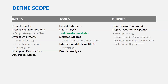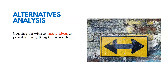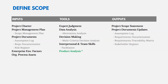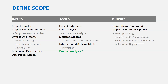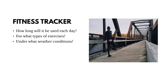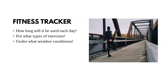Alternatives analysis is coming up with as many ideas as possible for getting the work done. Product analysis defines scope by asking questions about the use, characteristics, and other relevant aspects of what's going to be manufactured. For example, if you're creating a fitness tracker, you might ask potential customers: how long will it be used each day, for what types of exercises, under what weather conditions. The key output is the project scope statement — a detailed project description. You could also be making updates to requirements documentation, the stakeholder register, or an assumption log as you define scope.